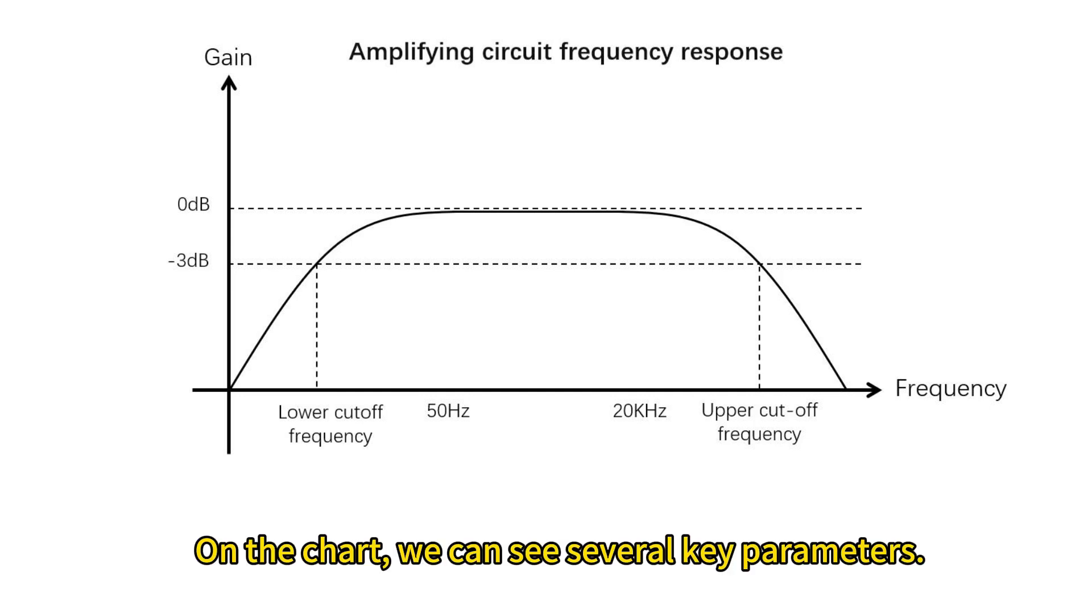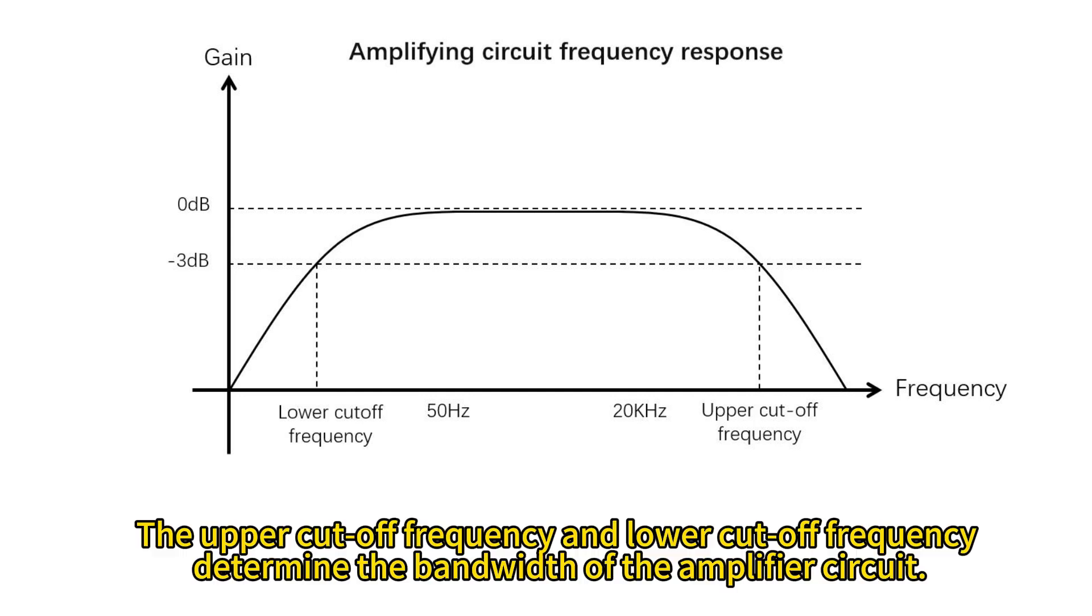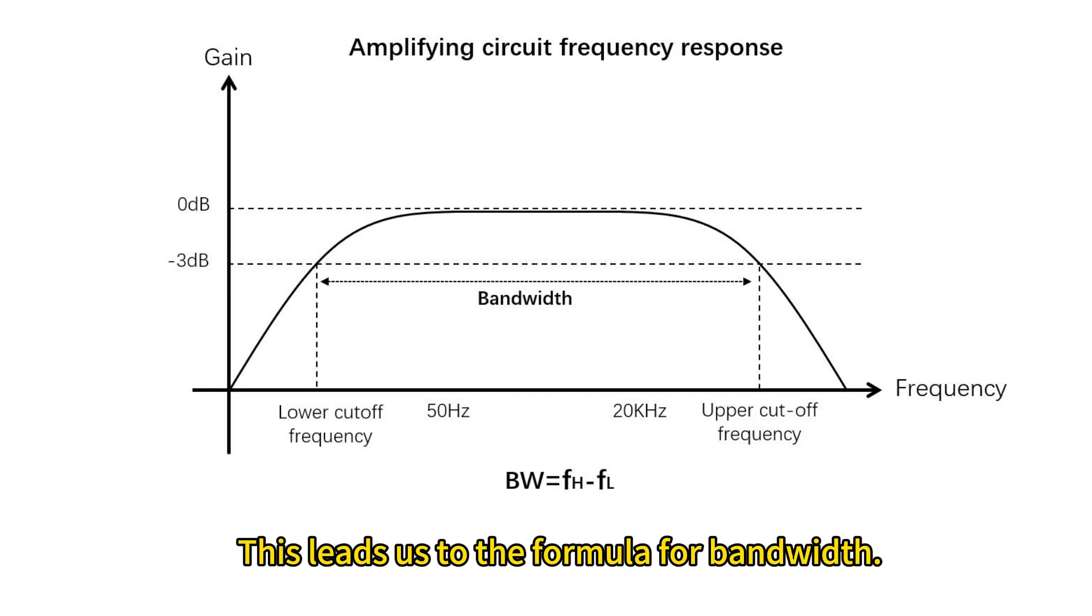On the chart, we can see several key parameters. The upper cutoff frequency and lower cutoff frequency determine the bandwidth of the amplifier circuit. This leads us to the formula for bandwidth.